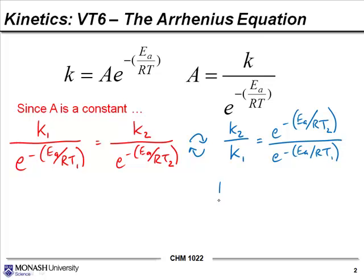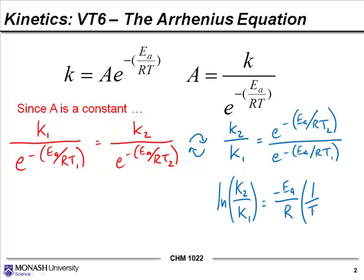Ultimately, it boils down to a nice form. If we take the natural log of both sides of that equation, you actually get an expression which ends up looking pretty neat. More to the point, what we've actually isolated here is a version of the Arrhenius equation which doesn't contain the frequency factor at all. In other words, if you have the rate constant at one temperature, and I give you another temperature and the activation energy, then you should be able to give me the rate constant at that temperature as well using that equation, even though you don't have a handle on the frequency factor.